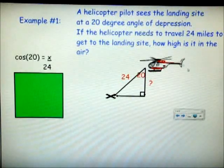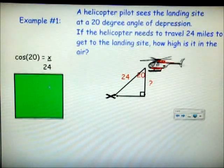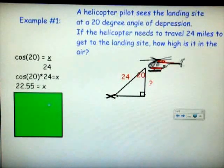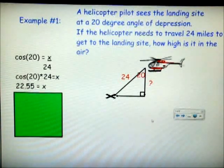So we go ahead and we set up our ratio. The cosine of 20 is equal to x over 24. This is the easier cross multiplication. We go through to find our answer. Here, at 22.55 miles is the height of the helicopter in the air. And again, we used angle of depression.